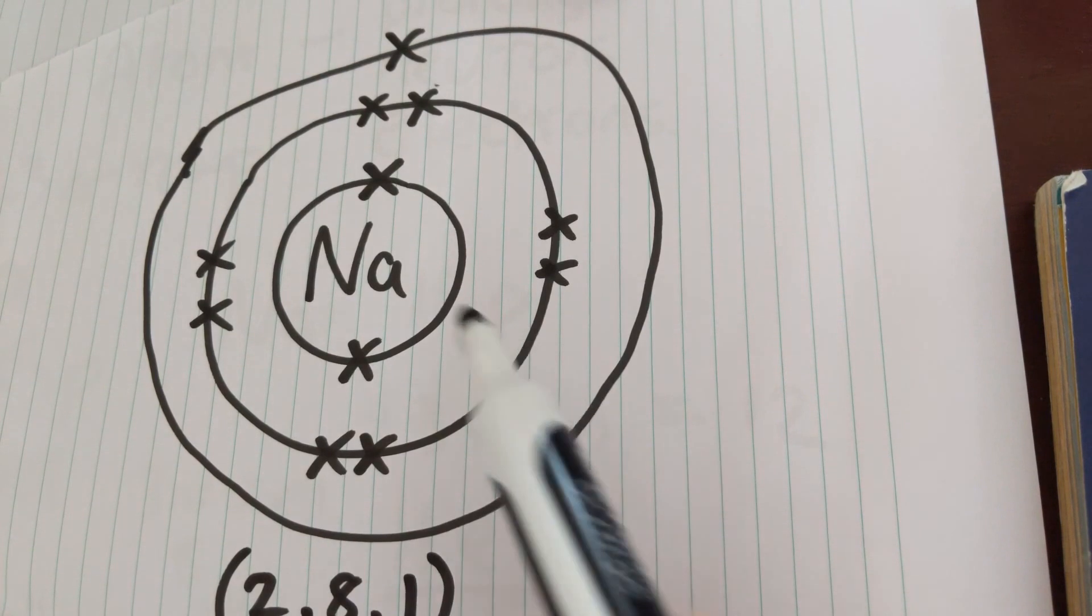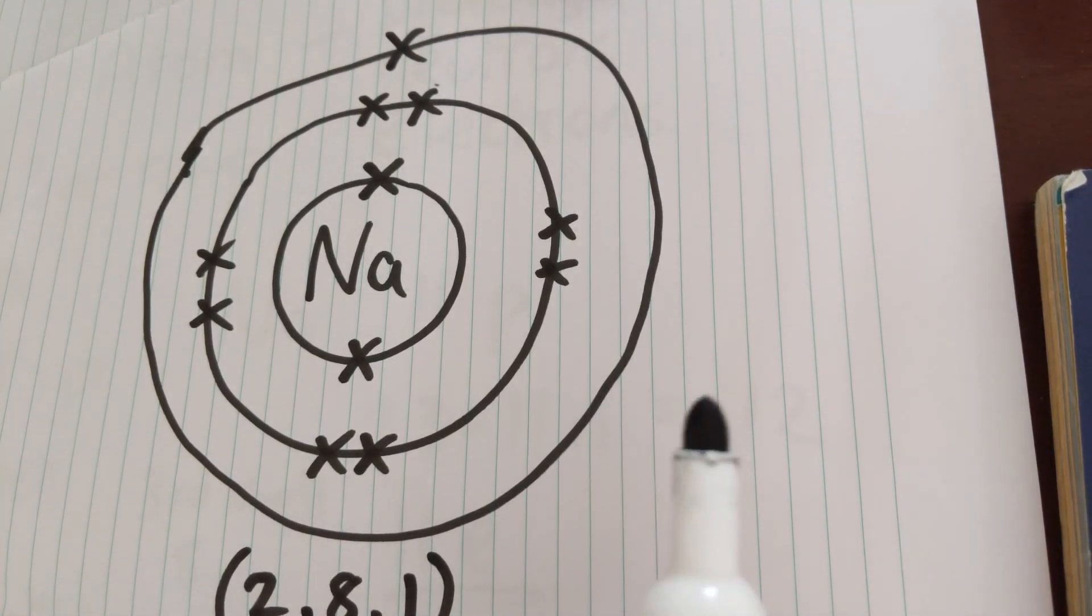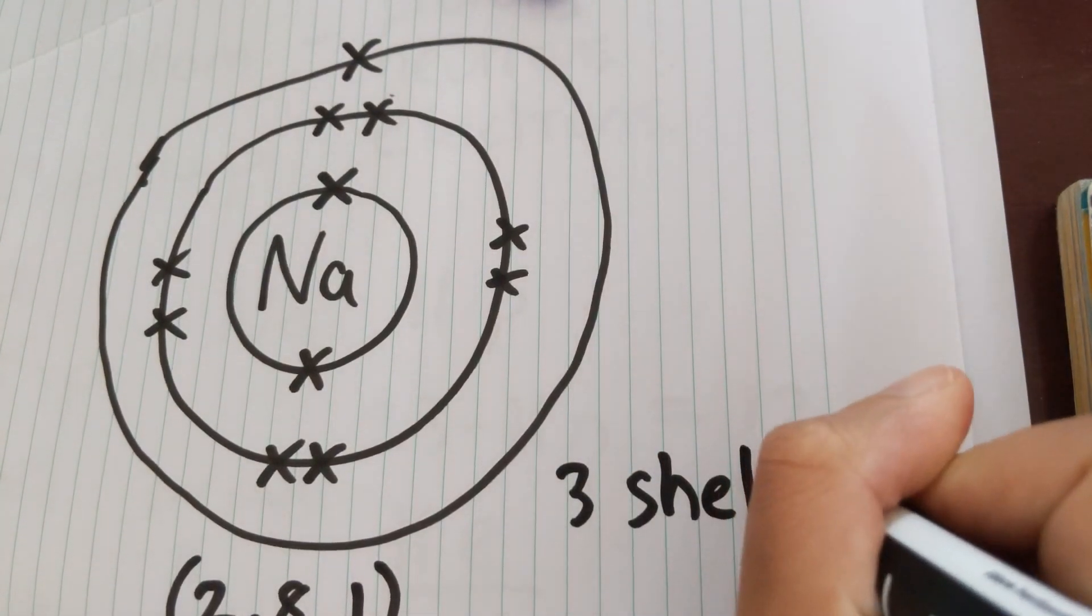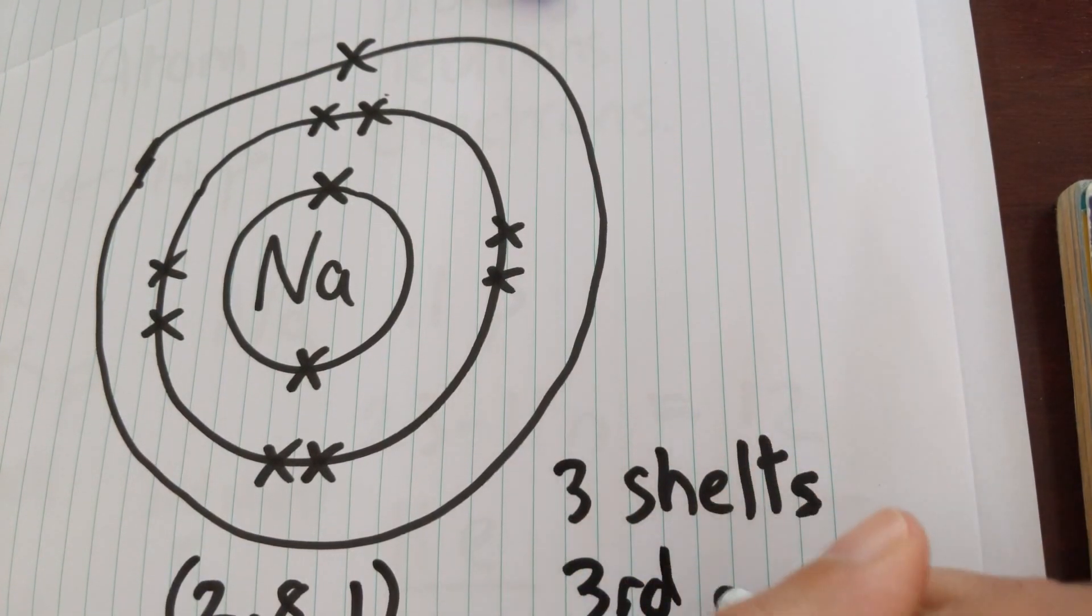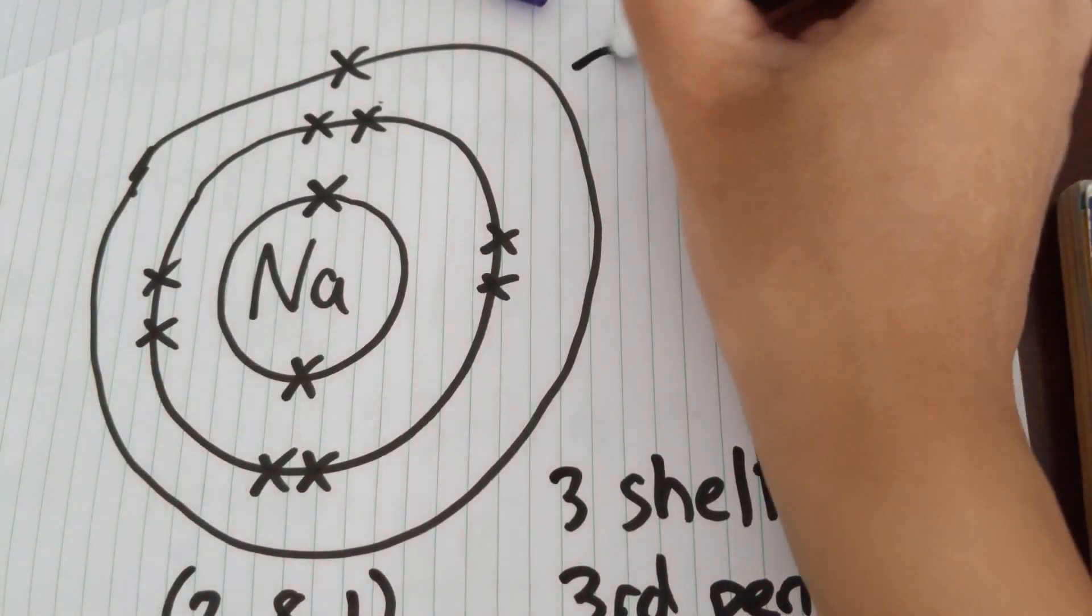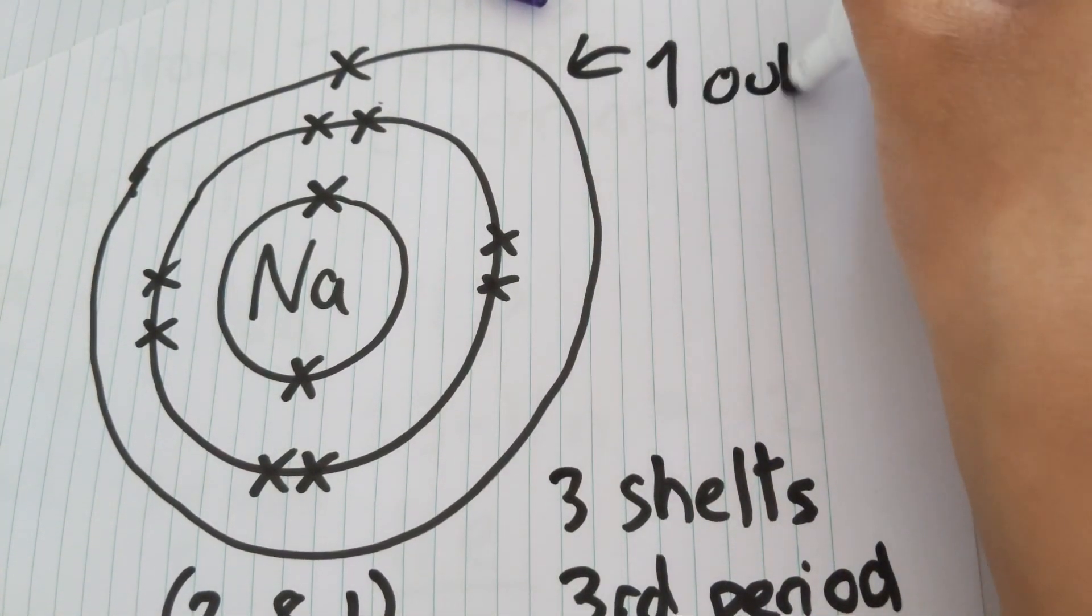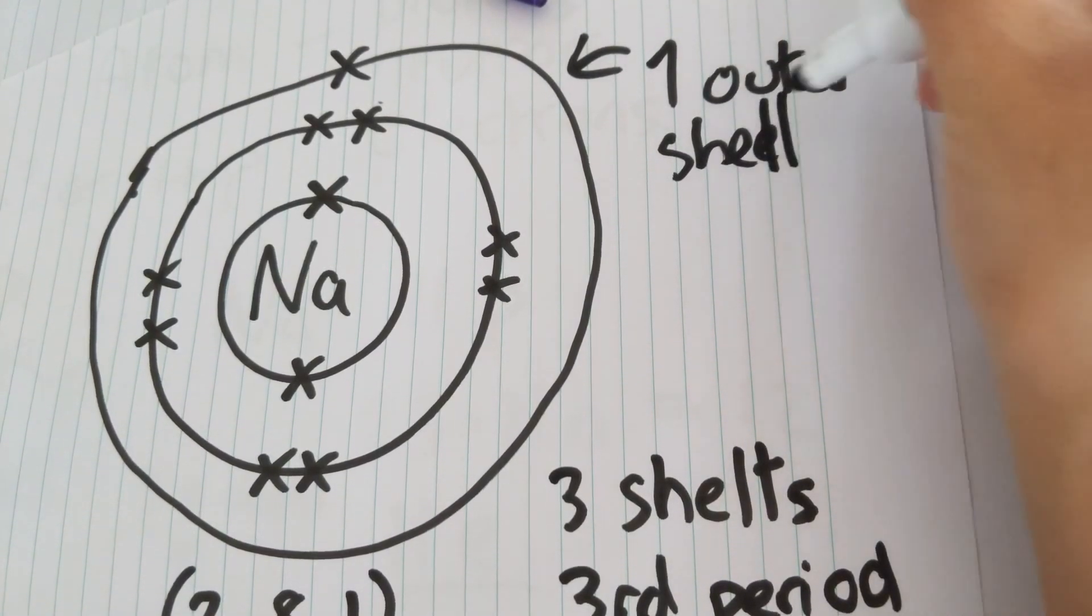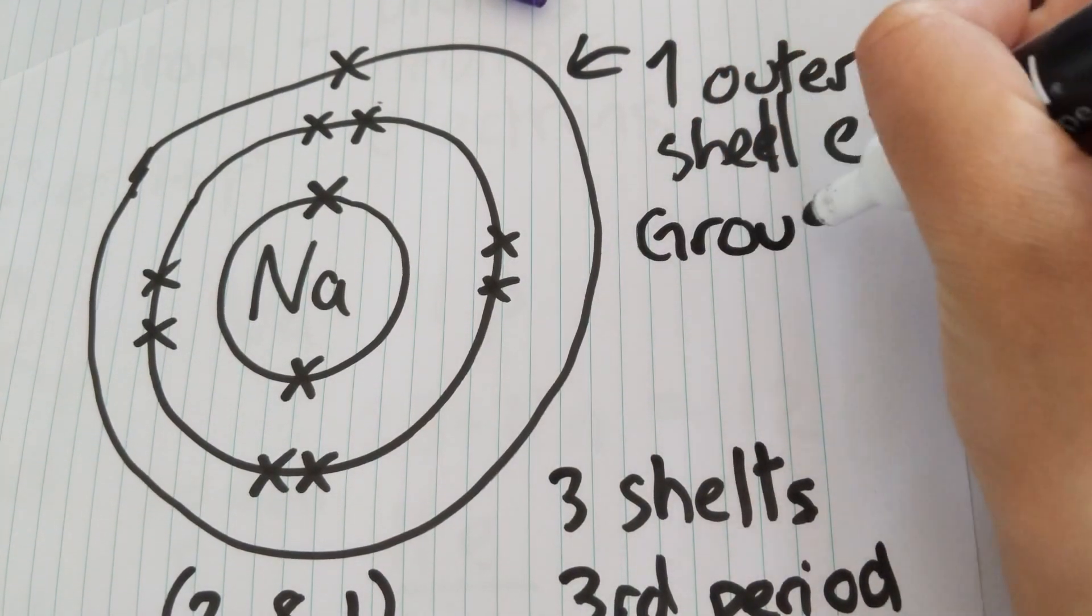And the other thing we know is that because it has three shells of electrons, it must be in the third period. So three shells means it's in third period. And one outer shell electron, I'm just going to call it E minus, means it's in group one.